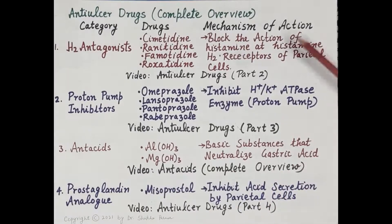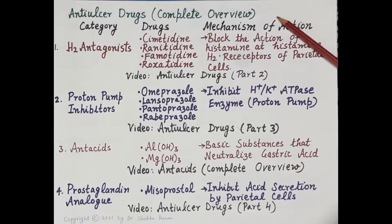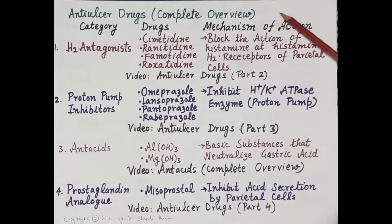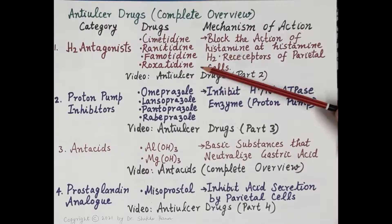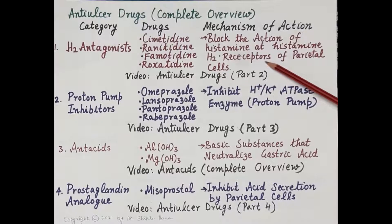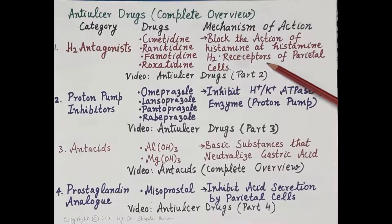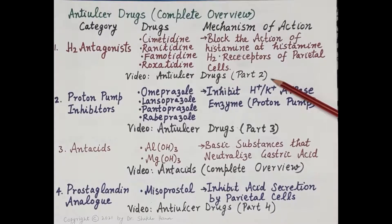The first category of drugs is the H2 antagonists. Examples include cimetidine, ranitidine, famotidine, and roxatidine. These drugs block the action of histamine at histamine H2 receptors on the parietal cells. Complete pharmacology of H2 antagonists is covered in the video on anti-ulcer drugs part 2.